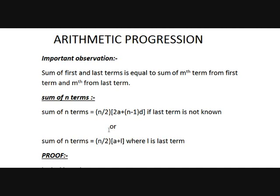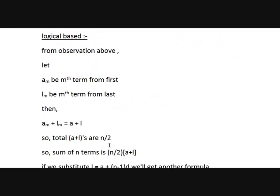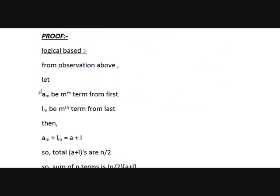If you substitute the last term, it becomes a plus a plus n minus 1 times d, which gives 2a plus n minus 1 times d. From this substitution we get the first formula. Similarly, in the first formula, if you write 2a as a plus a, then a plus n minus 1 times d becomes l, and you get the second formula. Now let's take some proofs to prove that the sum of n terms is n by 2 into a plus l, or n by 2 into 2a plus n minus 1 times d.